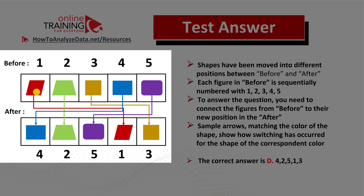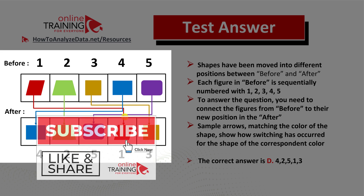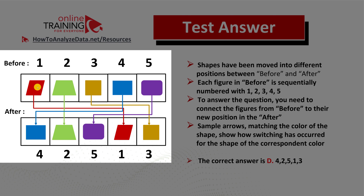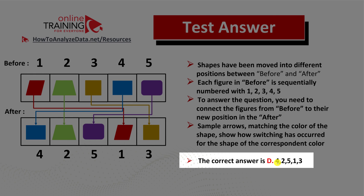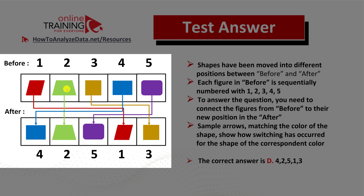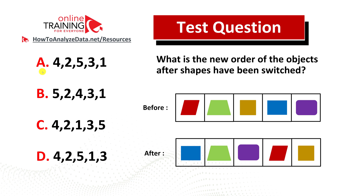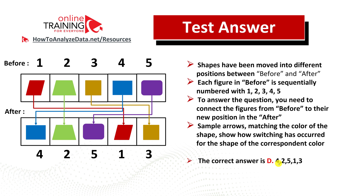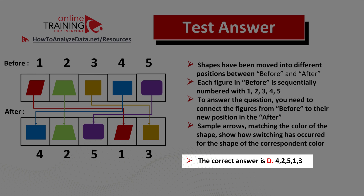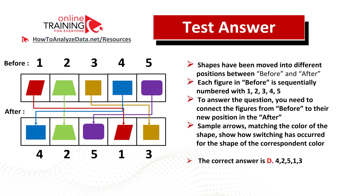To get the correct answer, take one shape at a time and draw a mental line from its before position to its new after position. The red shape was in position one and will be in position four after. The second shape stayed in place — position two. The third shape moved to position five. So the first three choices are four two five, which narrows it to answer A or answer D. Continuing to trace the remaining objects, the correct answer is choice D: four two five one three. If you know a better way to solve it, please share in the comment section.